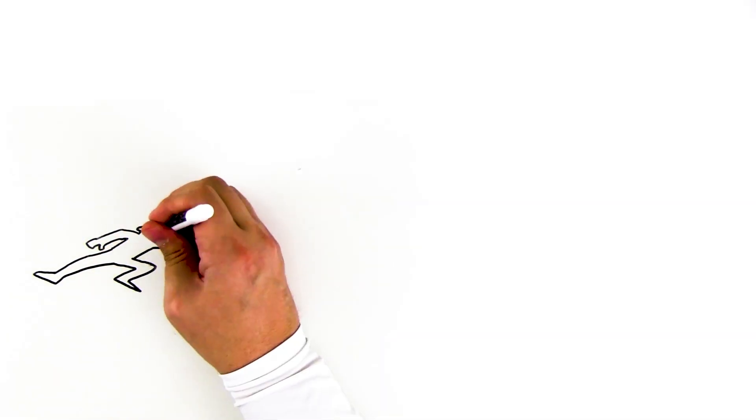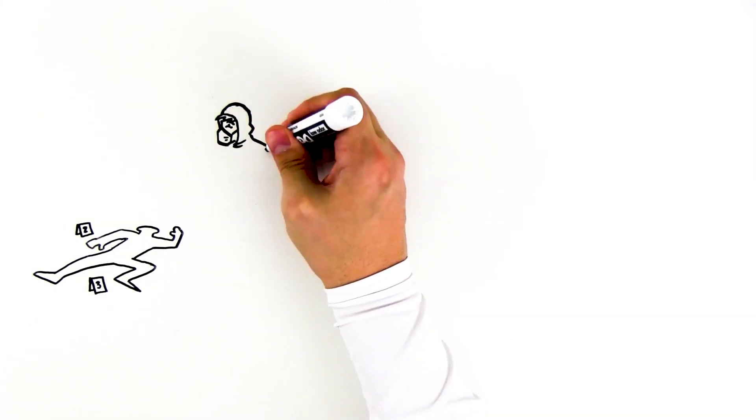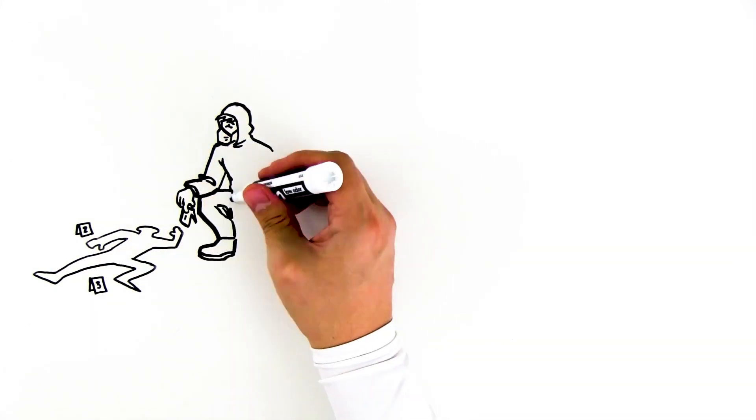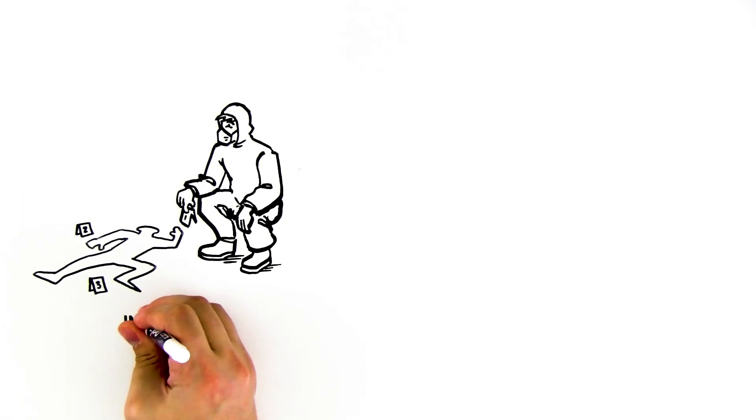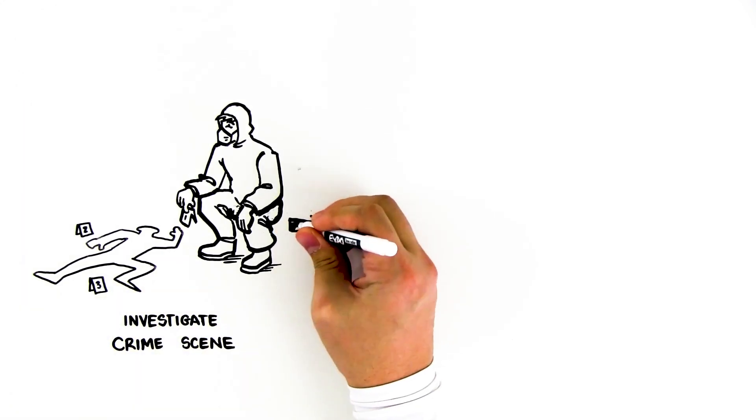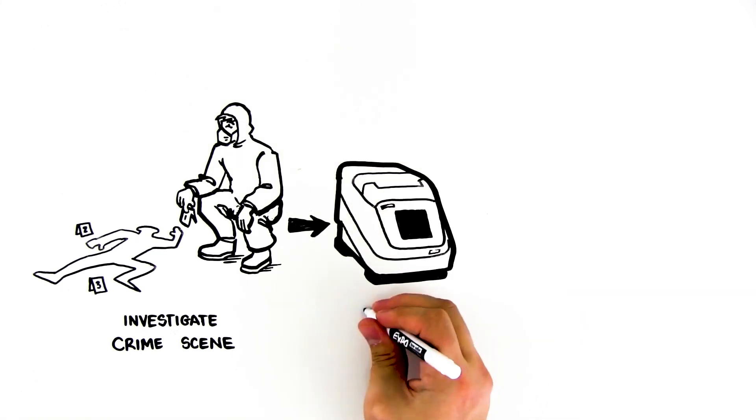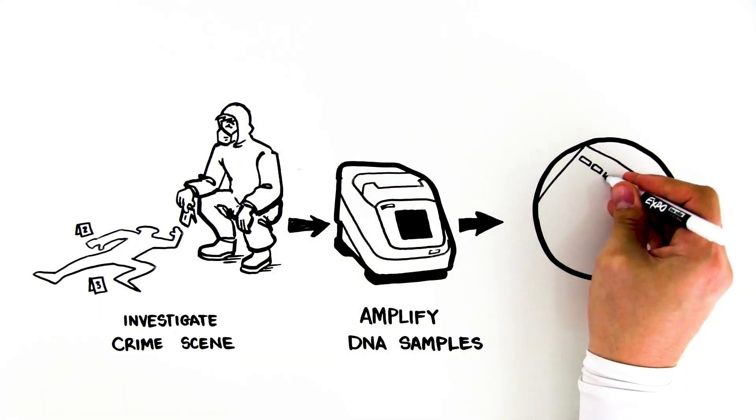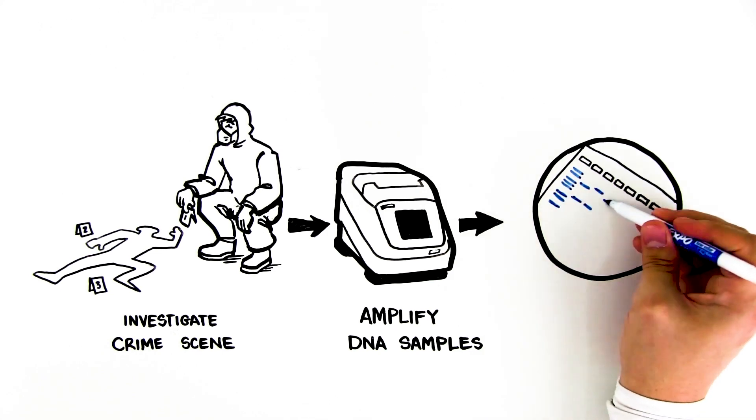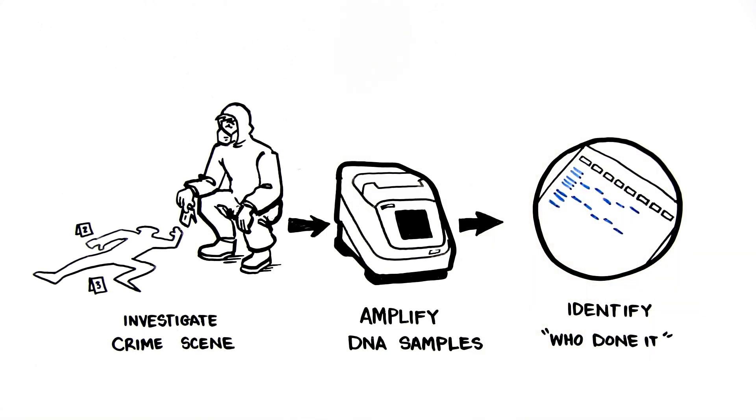In Bio-Rad Explorer's Crime Scene Investigator PCR Basics Kit, students use real DNA evidence to solve a crime. Students become detectives as they amplify crime scene and suspect DNA by PCR. Using the same statistical approach as the FBI, they determine who was at the crime scene.